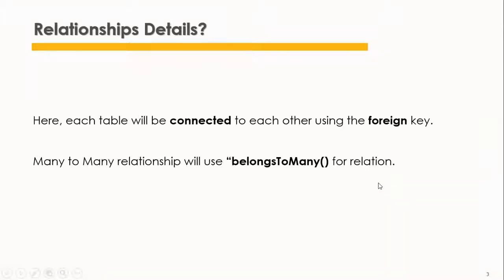To define this relationship, each table will be connected to each other using the foreign key, and the many-to-many relationship will use the belongs-to-many relation. In the next episode, part two, we're going to look at how these relationships are defined on the tables and on the models.